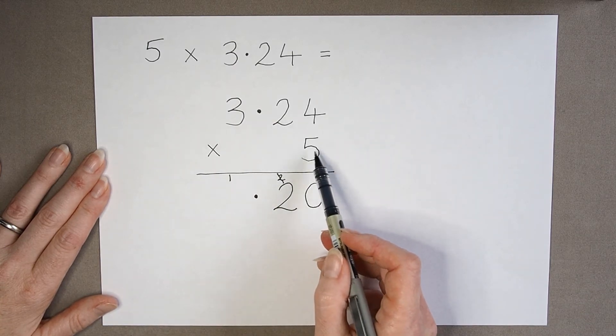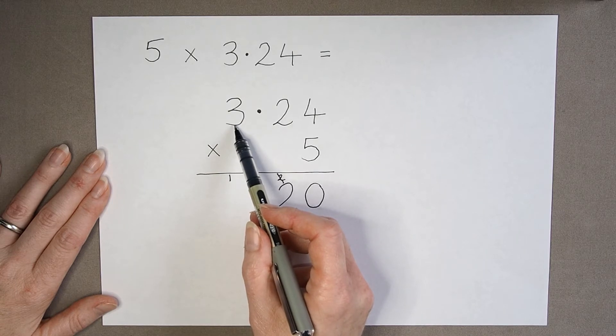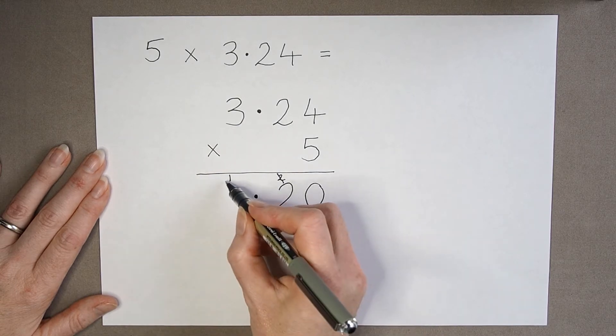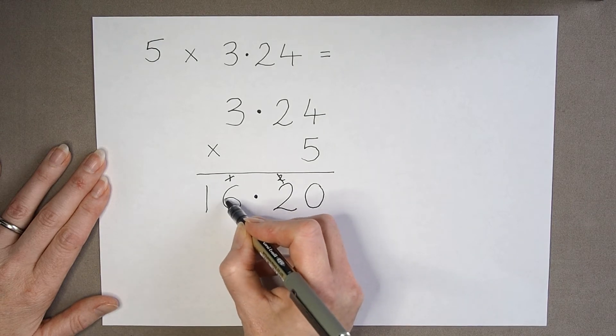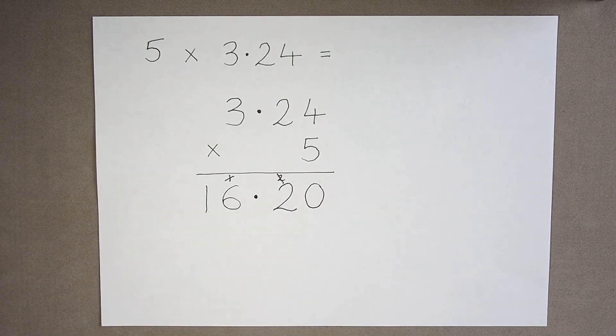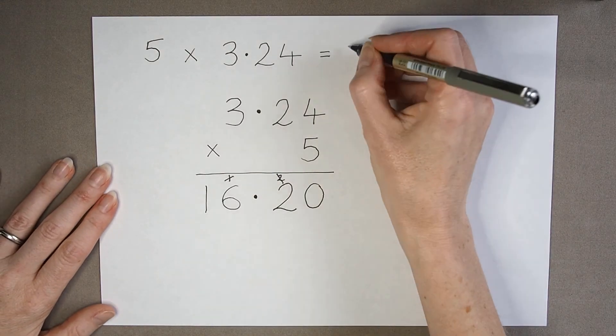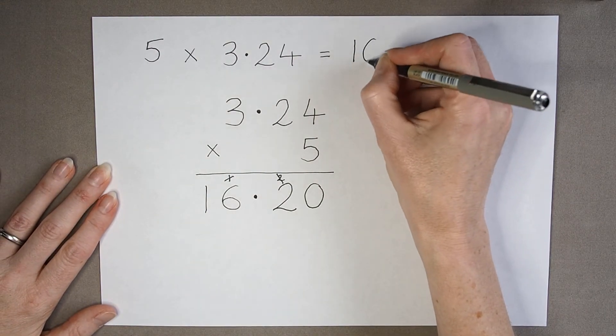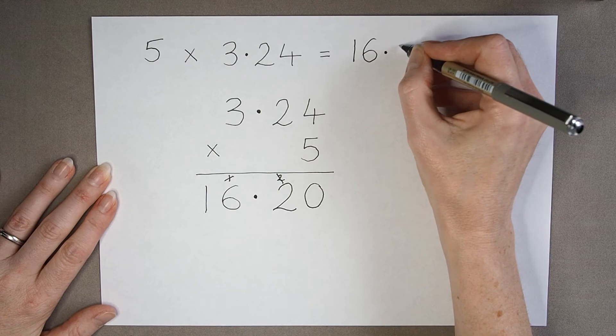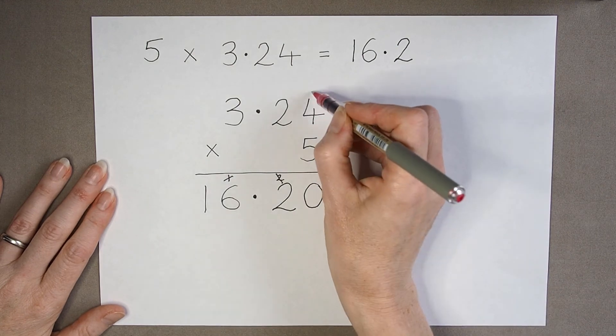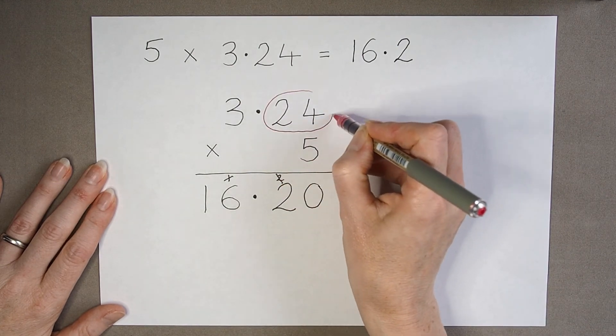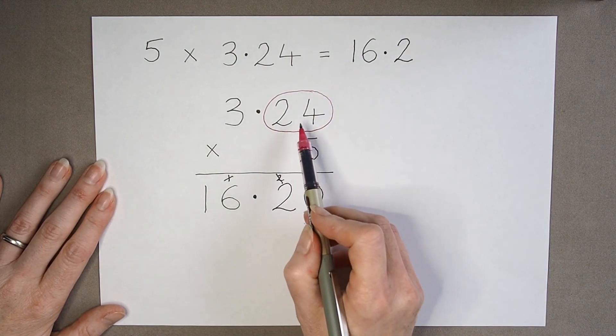And 5 multiplied by 3 is 15. Add on the extra one is 16. 16.20, which we would normally write as 16.2. We don't need the zero.